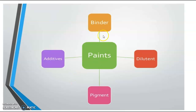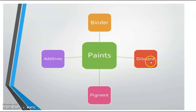In paints, we have four basic components: binders, dilutants, pigments, and additives. Binders are used to bind the paint to the substrate. The dilutant alters the viscosity of the paint. Pigments impart color to the paint, and additives give extra qualities to the paint.